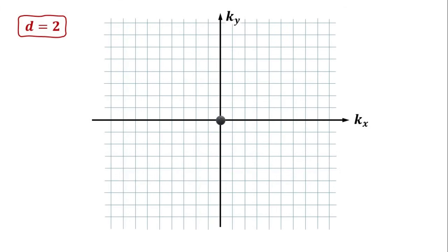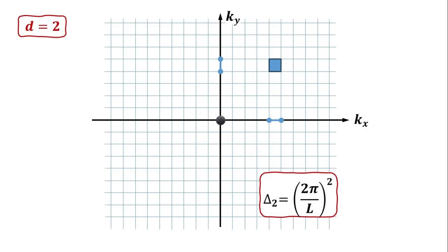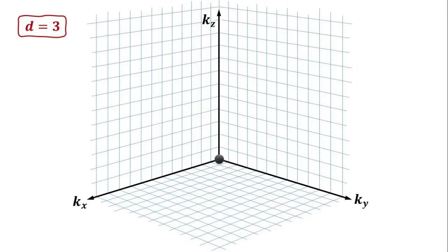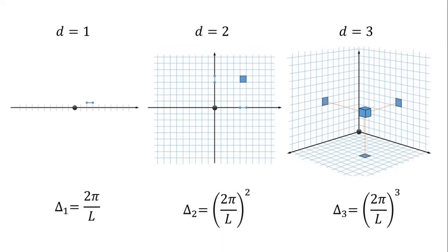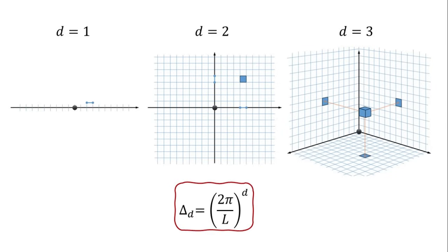For dimensionality d equals to 2, the discretization occurs over an area in k-space, with the spacing between allowed k-points given by 2 pi divided by l-squared. For dimensionality d equals to 3, the discretization occurs over an elemental volume in k-space, herein given by 2 pi divided by l-cubed. Combining these results, a simple rule starts to emerge, allowing us to express the discretization volume in k-space for any arbitrary dimensionality d.